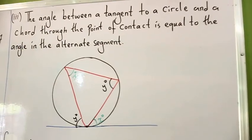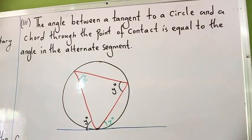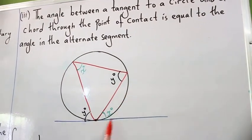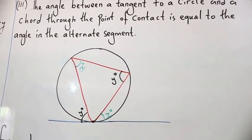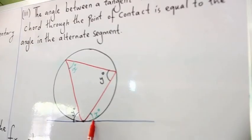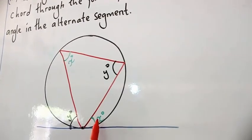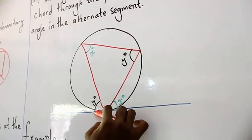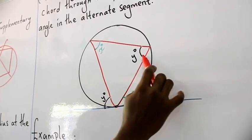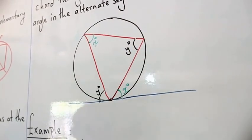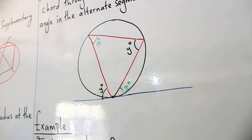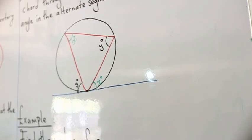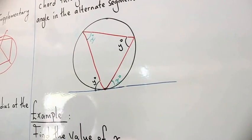The final theorem states that the angle between a tangent to a circle and a chord through the point of contact is equal to the angle in the alternate segment. From the diagram, angle x here is equal to the angle in the alternate segment. Similarly, angle y has a corresponding equal angle in the alternate segment. Look at the diagram closely to understand the connection between the two angles.